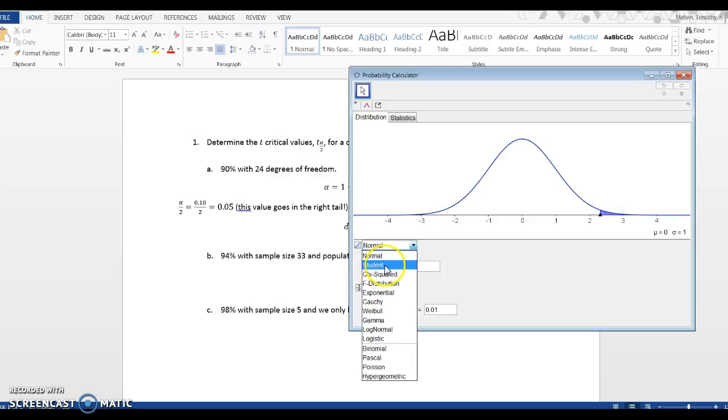Notice right here there's a DF for degrees of freedom, my only input to change the function. So I'm going to type in 24, click enter to change this.